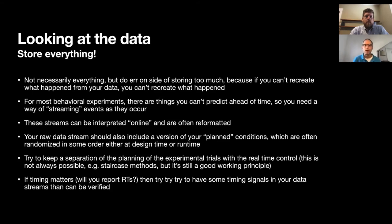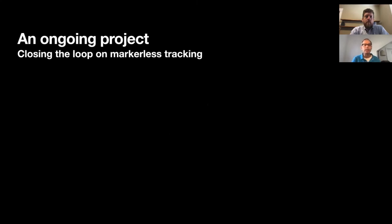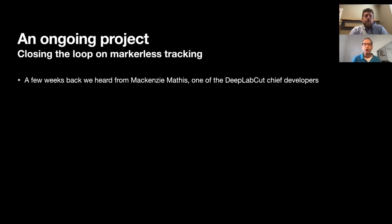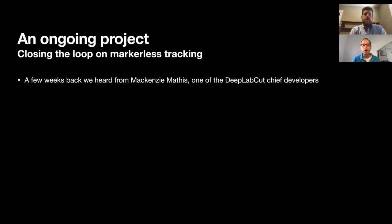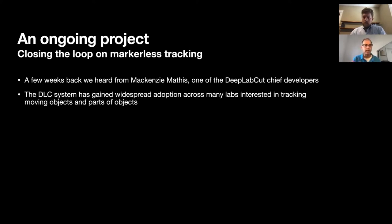That's the background. Now I'm going to describe a project we're working on called 'Closing the Loop on Markerless Tracking.' A couple of weeks ago, we heard from Mackenzie Mathis, one of the DeepLabCut chief developers. She and their group have been developing this system for markerless video acquisition that can be processed to deliver estimations of where things are — objects or parts of objects like limbs — taking advantage of the current generation of convolutional neural networks well adapted to this kind of problem. It's gained widespread adoption as DeepLabCut, or DLC. It actually does what they say — with very little training, you can get quite reliable results.